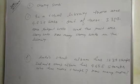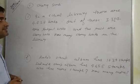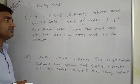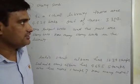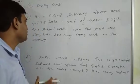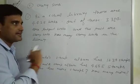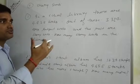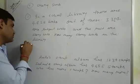Now, story sums. In a school library, there are 4425 books. Out of these, 3314 are subject books and the rest are story books. How many story books in the library?